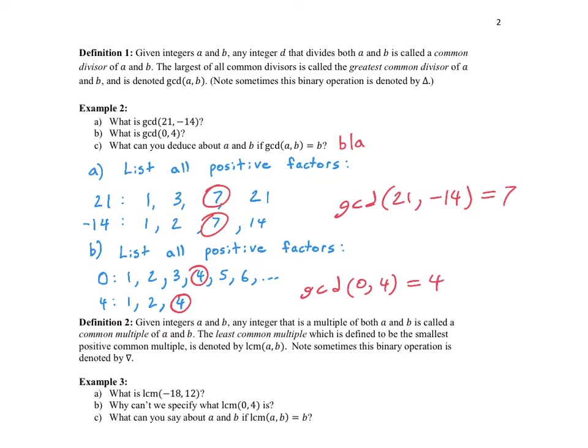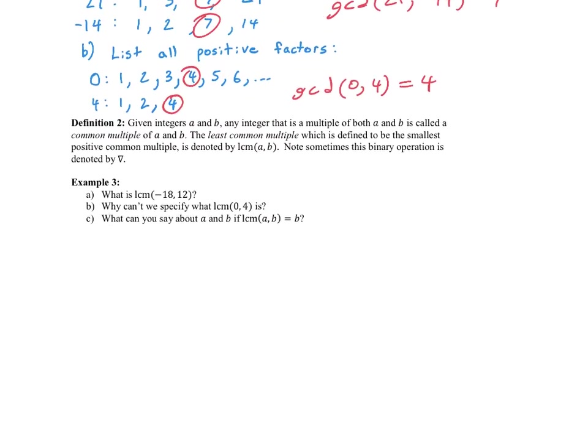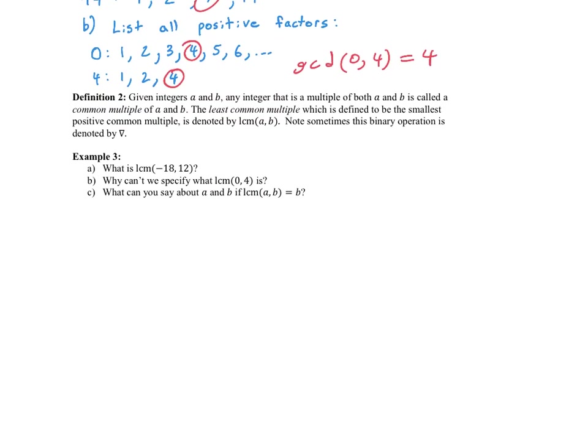Now let's move to the LCM. Given integers A and B, any integer that is a multiple of both A and B is called a common multiple. The smallest positive common multiple is what we're looking for, denoted LCM(A, B). We can also define it as a binary operation using an upside-down triangle.